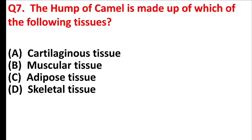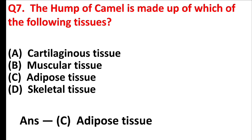The hump of a camel is made up of which of the following tissues? Answer is option C: adipose tissue.